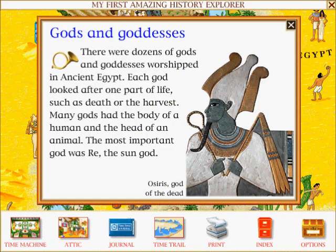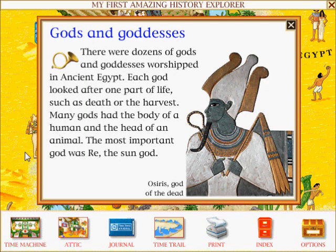Gods and goddesses: There were dozens of gods and goddesses worshipped in ancient Egypt. Each god looked after one part of life, such as death or the harvest. Many gods had the body of a human and the head of an animal. The most important god was Ra, the sun god.